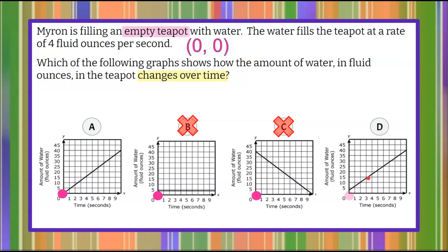Graph D, plot that origin, and we can see that that does not have the origin point either. This is at zero seconds, there's about four fluid ounces of water in the teapot. And we know that that is not true with this teapot. So we're going to eliminate graph D.